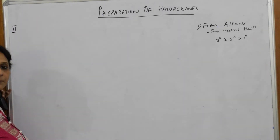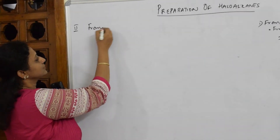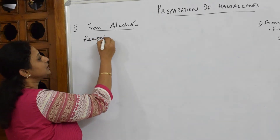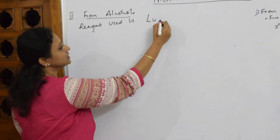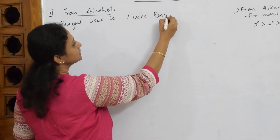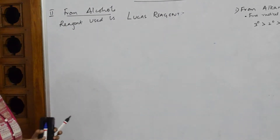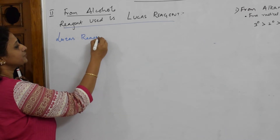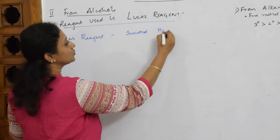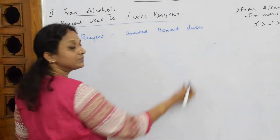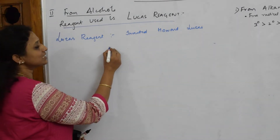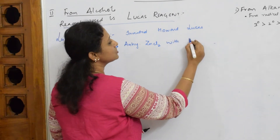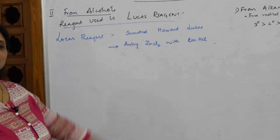Now I'm coming to preparation 2 of haloalkenes — from alcohols. The reagent used is Lucas reagent. Lucas reagent was first invented by an American chemist named Lucas. Lucas reagent is a mixture of anhydrous ZnCl₂ with concentrated HCl.